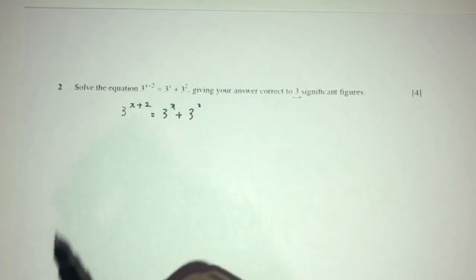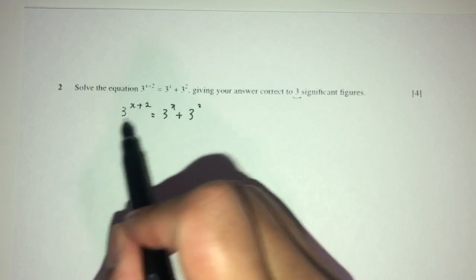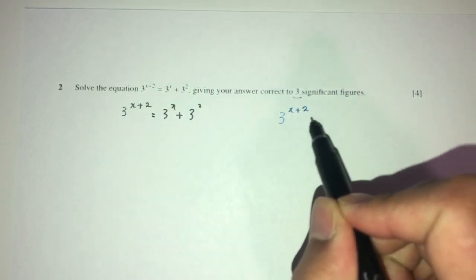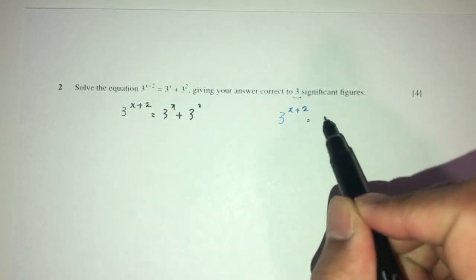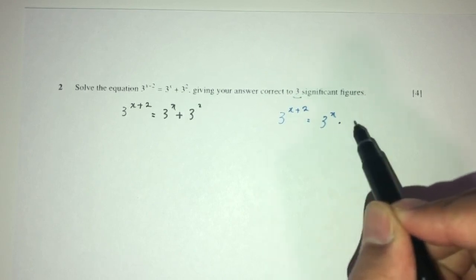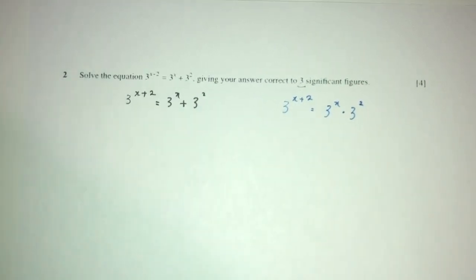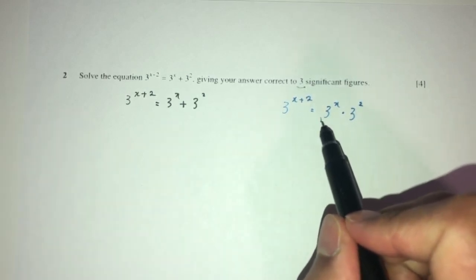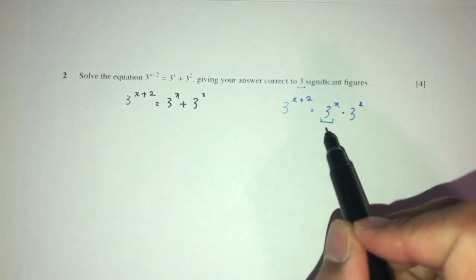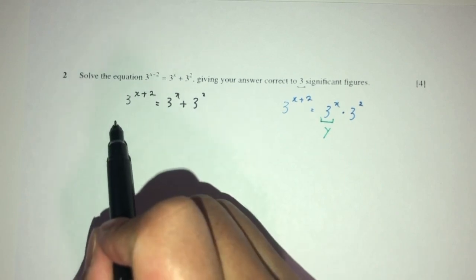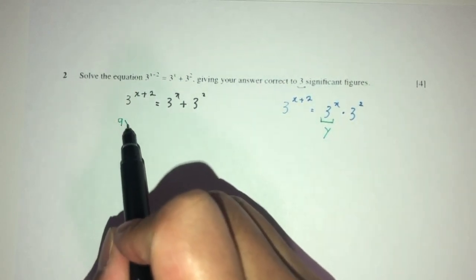Now, how can we solve this? One by one, we can try to break this down. By the laws of indices, 3 to the power of x plus 2 is the same as 3 to the power of x multiplied by 3 to the power of 2. To make our life easier, we can let 3 to the power of x equal y. So 3 squared is 9, and you have 9y.